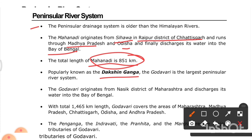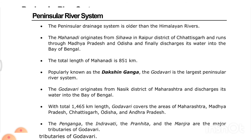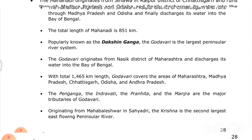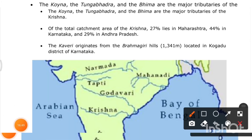The Godavari is the largest peninsular river. It originates from the Nasik district of Maharashtra and discharges into the Bay of Bengal, with a total length of 1,465 kilometers. It covers Maharashtra, Madhya Pradesh, Chhattisgarh, Odisha, and Andhra Pradesh. Its major tributaries are the Purna, Indravati, Pranhita, and Manjra.